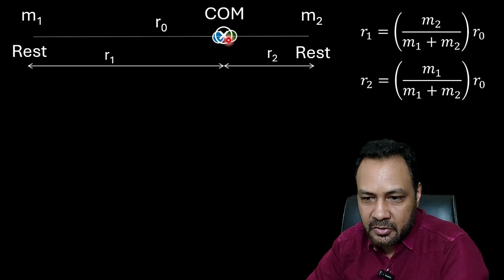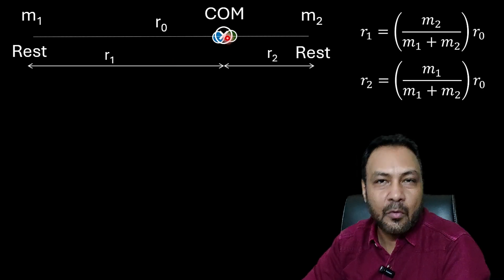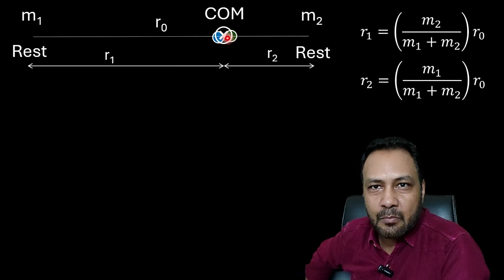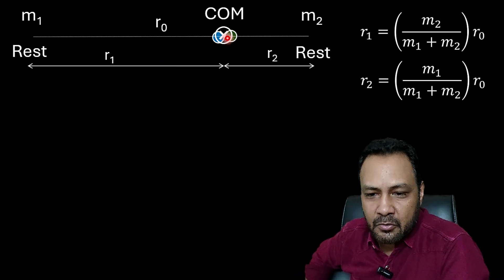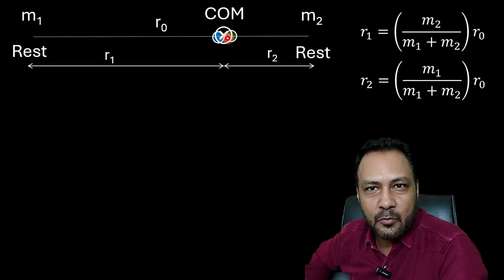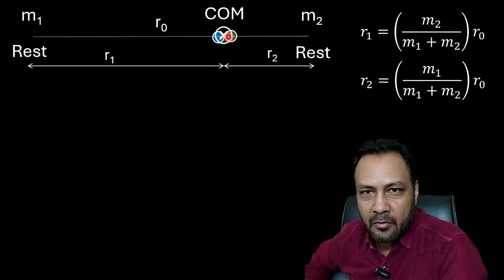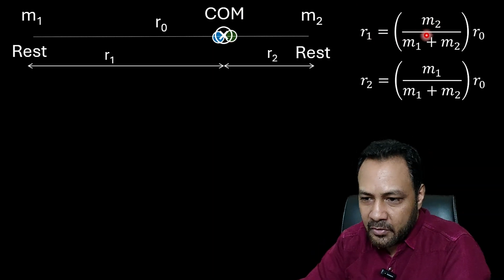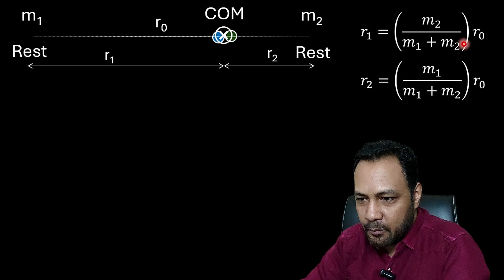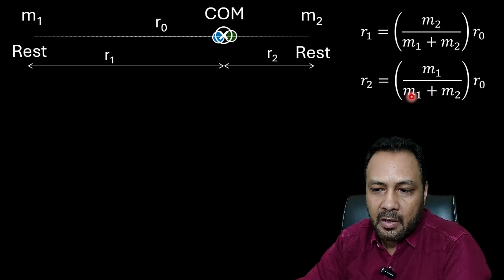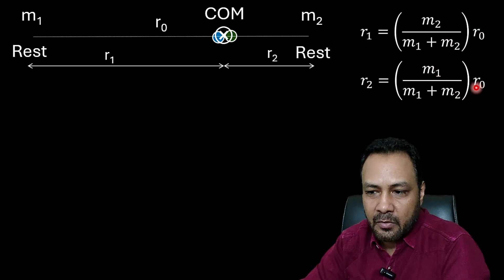Since the center of mass moment is zero, M1·R1 = M2·R2 and R1 + R2 = R0. Solving these, we get R1 = (M2 / (M1 + M2))·R0 and R2 = (M1 / (M1 + M2))·R0.